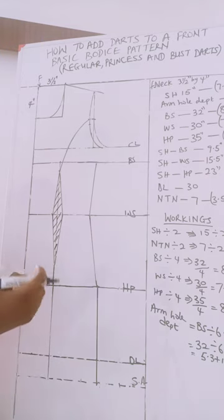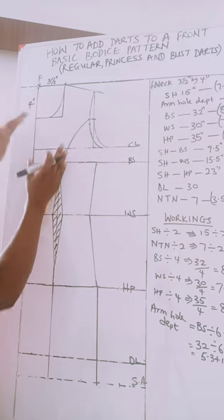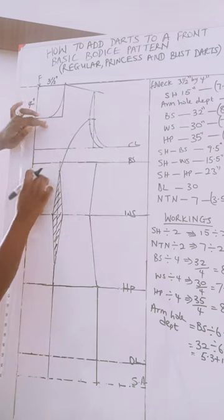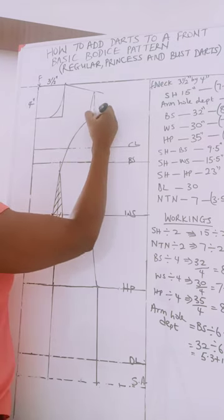Now in order for us not to have any shortages when we are joining back, because by the time we cut out this part is going to be separated from this part, so in order not to have any shortage, you can extend this line.